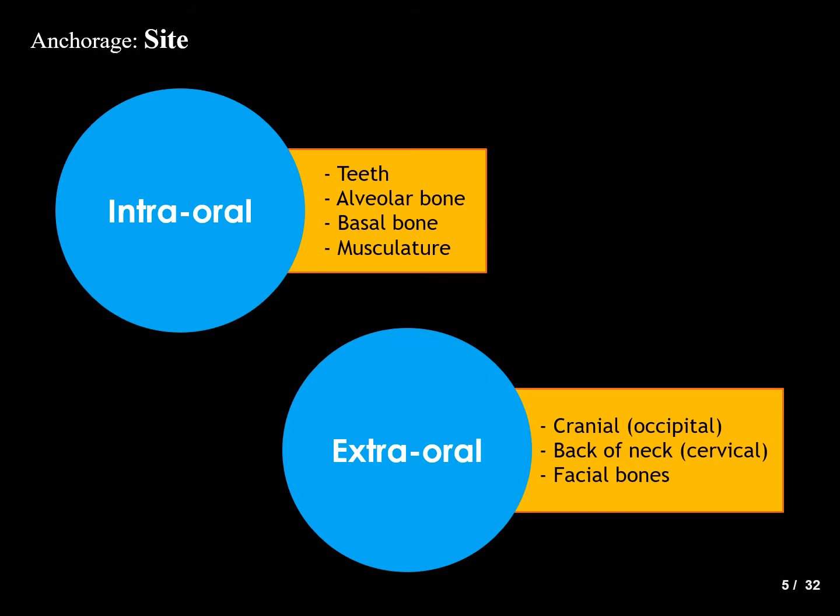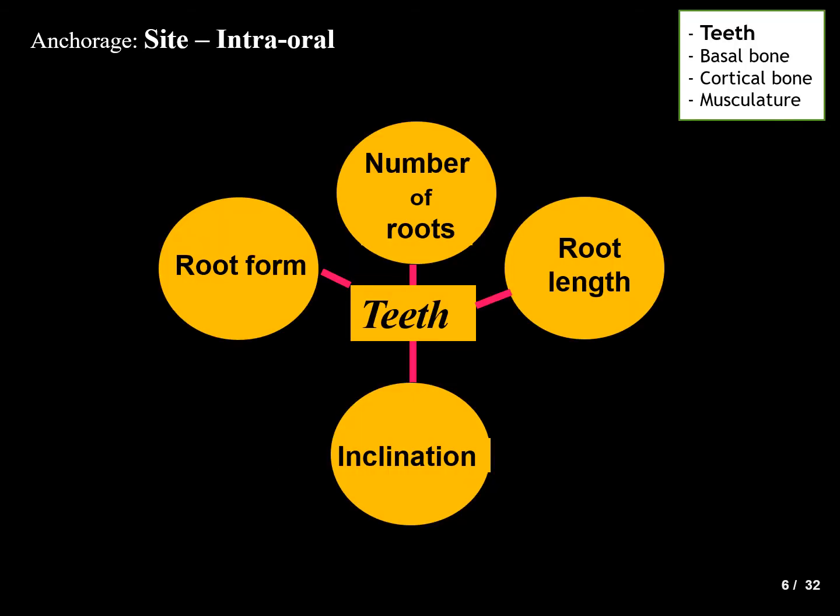The first source of anchorage based on site is divided into intraoral and extraoral. Intraoral is further divided based on teeth, alveolar bone, basal bone, and the musculature. Extraoral is divided into cranial or occipital, cervical (back of the neck), and the use of facial bones.